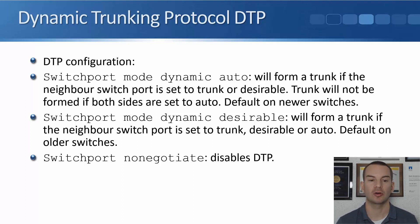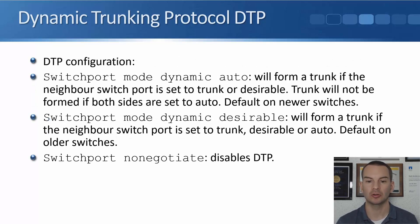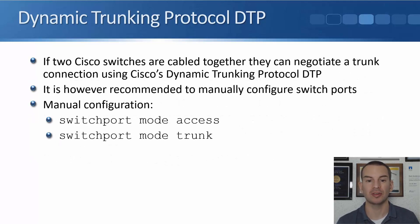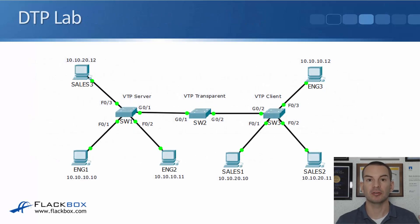The last option is 'switchport nonegotiate', which disables DTP. So your different options for the switchport mode are: access, trunk, dynamic auto, or dynamic desirable. The recommended approach is to use either 'switchport mode access' where your end hosts are plugged in, or 'switchport mode trunk' where you've got another switch plugged in.